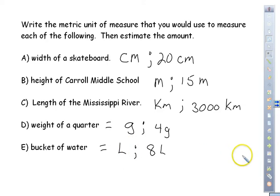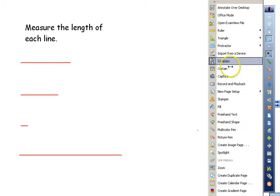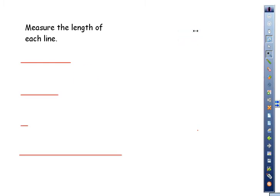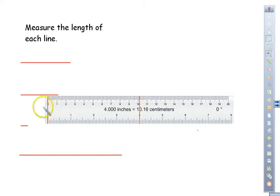These estimation parts are more difficult, but the most important thing is identifying which unit of measurement to use. Now we're going to measure some lines using a ruler — specifically the metric side, which shows centimeters.